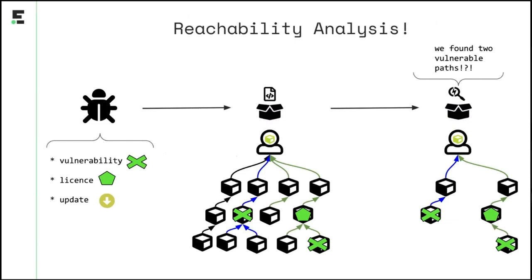We want to track a couple of different types of issues — for example, are we affected by vulnerabilities, do we have license violations, or are there dependencies that haven't been updated for a very long time? What you do is build a dependency tree, and if you use vulnerability and license markers next to package versions, you might find three of those in the dependency tree. The next step is to see where the path is from each of those packages to your project. Here we find two paths that are reachable — and that's basically how we do reachability analysis: checking if we're using a vulnerable version and whether that version is reachable to us.